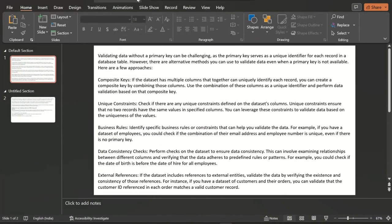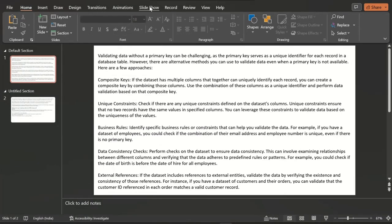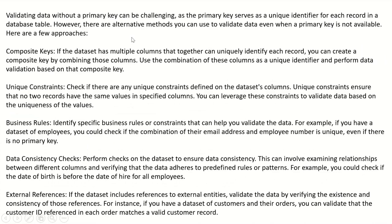So let's get started. The question is: how to validate the data if we are not having a primary key? Validating data without a primary key can be challenging, as the primary key serves as a unique identifier for each record in a database table. However, there are alternative methods you can use. The first one is composite keys — if the data set has multiple columns that together can uniquely identify each record.